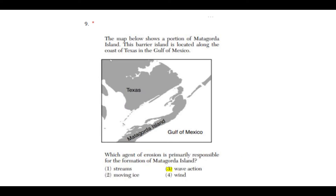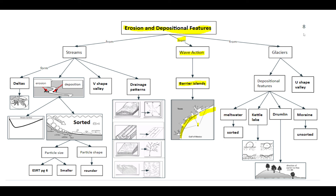Number nine: the map below shows a portion of Matagorda Island, a barrier island located along the coast of Texas in the Gulf of Mexico. Which agent of erosion is primarily responsible for the formation of Matagorda Island? The correct answer is three, wave action. Barrier islands are not attached to the mainland, and if you go to your Regents Review Packet page eight, barrier islands are listed as erosional and depositional features formed by wave action.